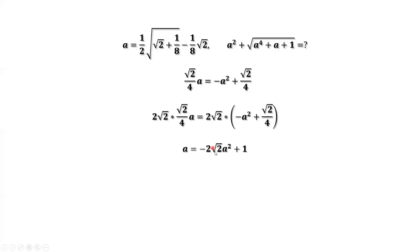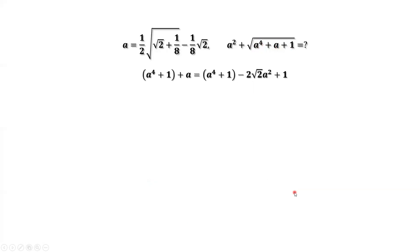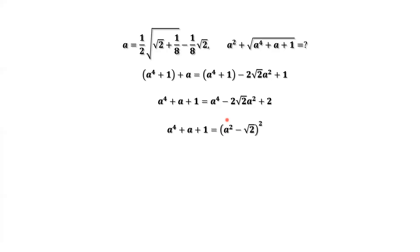We get a equals negative two times square root of two times a squared plus one. Then add a to the power of four plus one to both sides. The left-hand side is the same as the inside part of the square root sign: a to the power of four plus a plus one. Simplifying the right-hand side and completing the square, the right-hand side equals a squared minus square root of two, then squared.